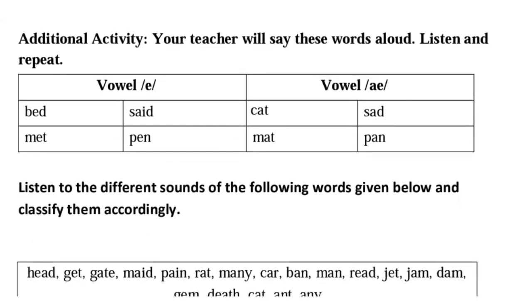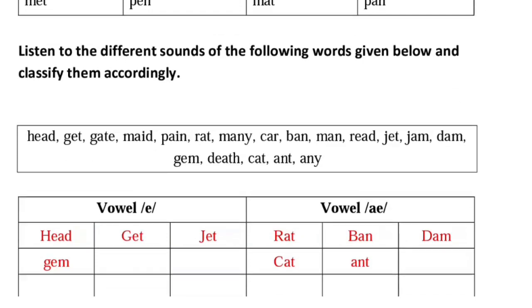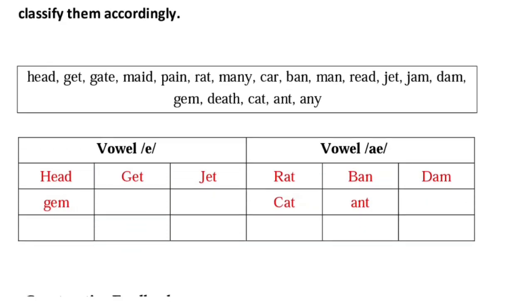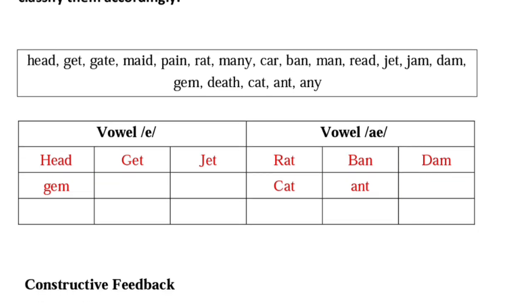The next activity is about vowel sounds. Here vowel sounds are given — for example, the short 'e' sound as in: bed, said, met, pen; and the short 'a' sound as in: cat, rat, ban, dam, ant. I have listed a few for you, but you have to list all the words in the boxes under their respective vowel sound. More examples: head, get, jet, gem — like this, there are many other words in the box that you have to write under the correct vowel sound.